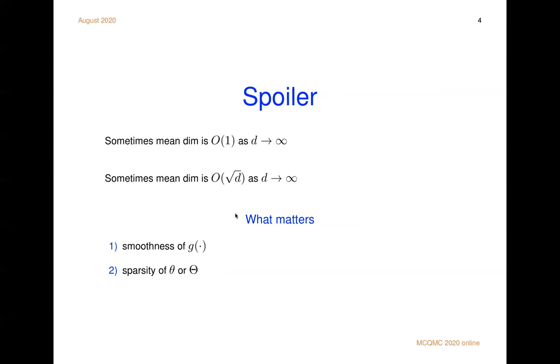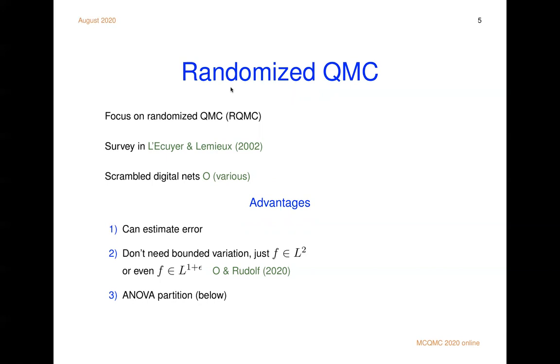Randomized quasi Monte Carlo. That's the method I'm going to use. In particular, I'll be talking about scrambled digital nets. They have a lot of favorable properties. I strongly advocate for randomized quasi Monte Carlo for several reasons.